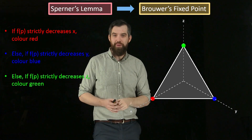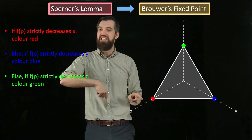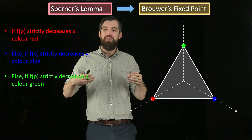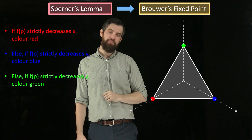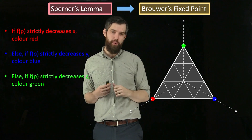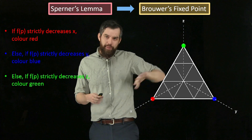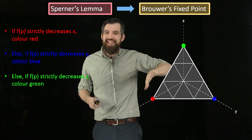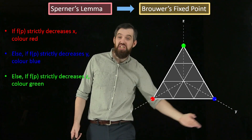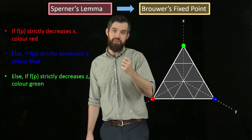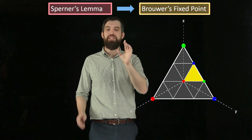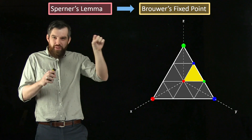Let's consider the big outside vertices first. If I look at the vertex at (1,0,0), either f(p) doesn't change it — in which case I'm done, f(p) = p, theorem proved — or if it does change it, because x is already at its maximum of 1, it has to decrease the value of x, so I color it red. Likewise for green and blue at their respective vertices. So this triangle now looks like Sperner's Lemma: along the left edge, y is 0 so we can never color it blue — only red and green. Along the bottom edge, only red and blue. Along the far side, only green and blue. This satisfies the conditions of Sperner's Lemma, so there must be a sub-triangle in the triangulation that has all three colors.